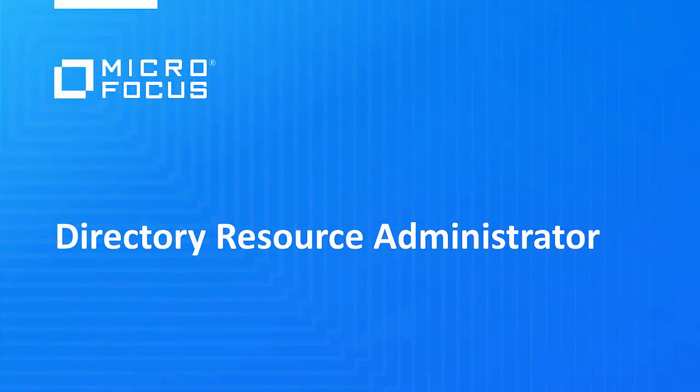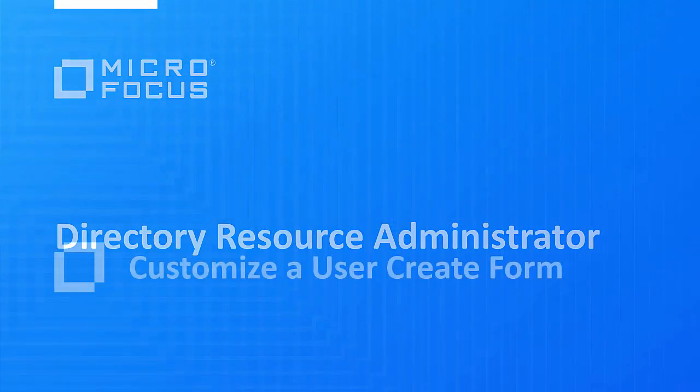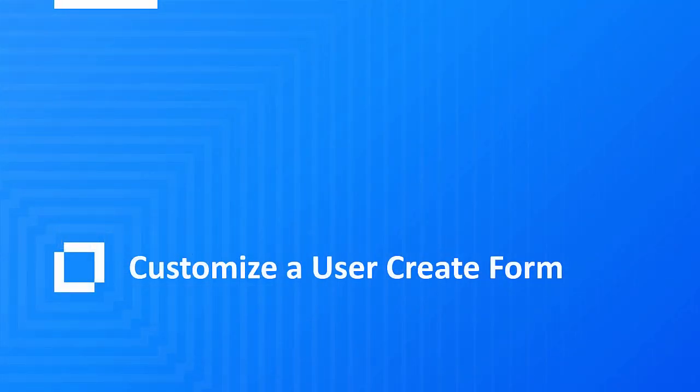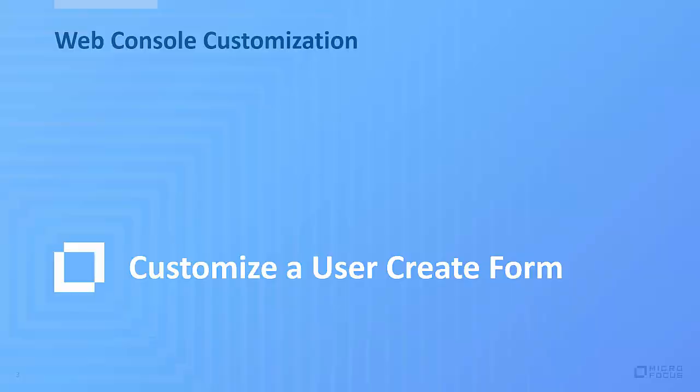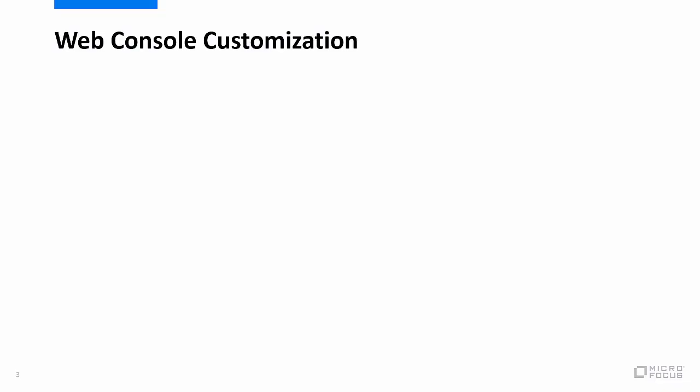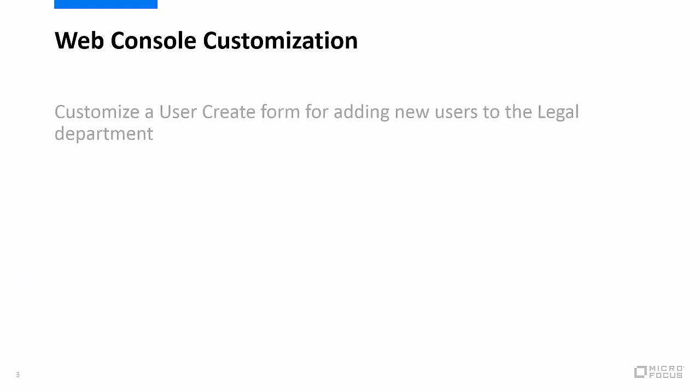Welcome to this DRA video demonstration. This video provides one example in the web console of how to customize a user create form to help automate adding new users to a company's network. Specifically, this scenario demonstrates how to use the Create New Action feature in DRA customization to create a customized user form that IT administrators will employ when they create new users in the company's legal department.